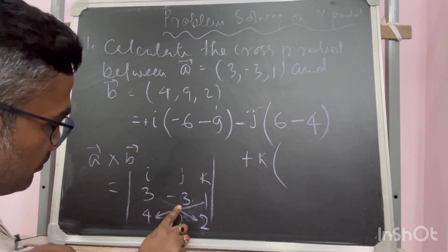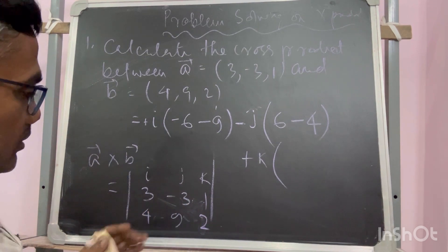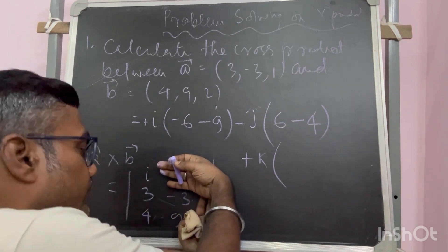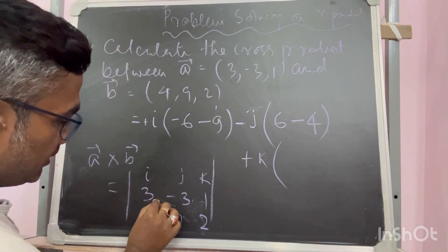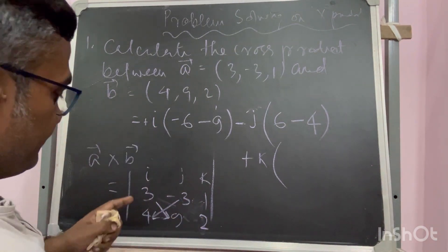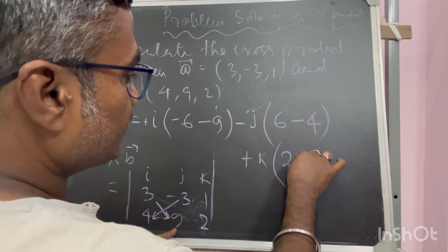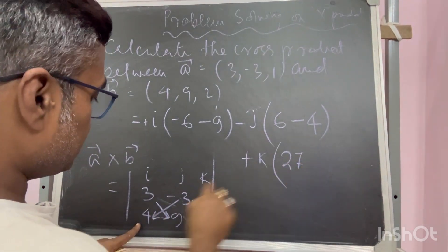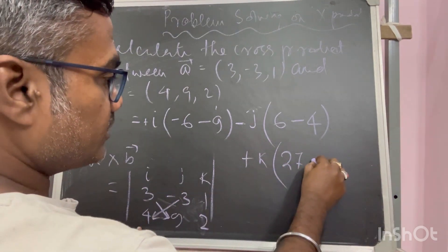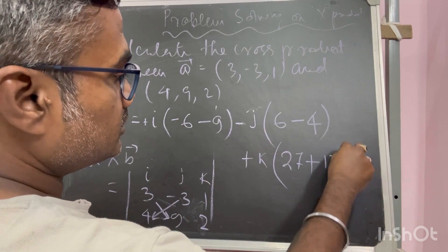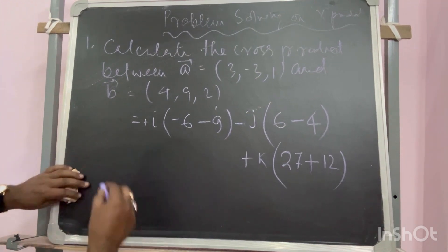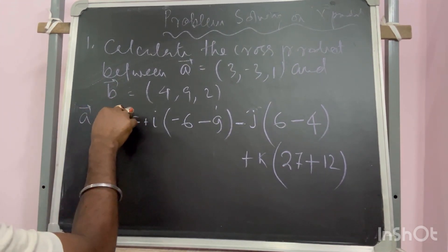For K, hide the other parts. You can see only the remaining four elements. Again, upper-left to right minus lower-left to right: (3 × 9) = 27, minus (-3 × 4) = -12. The two minuses together give plus, so 27 + 12 = 39K. This is the result after expanding the matrix.